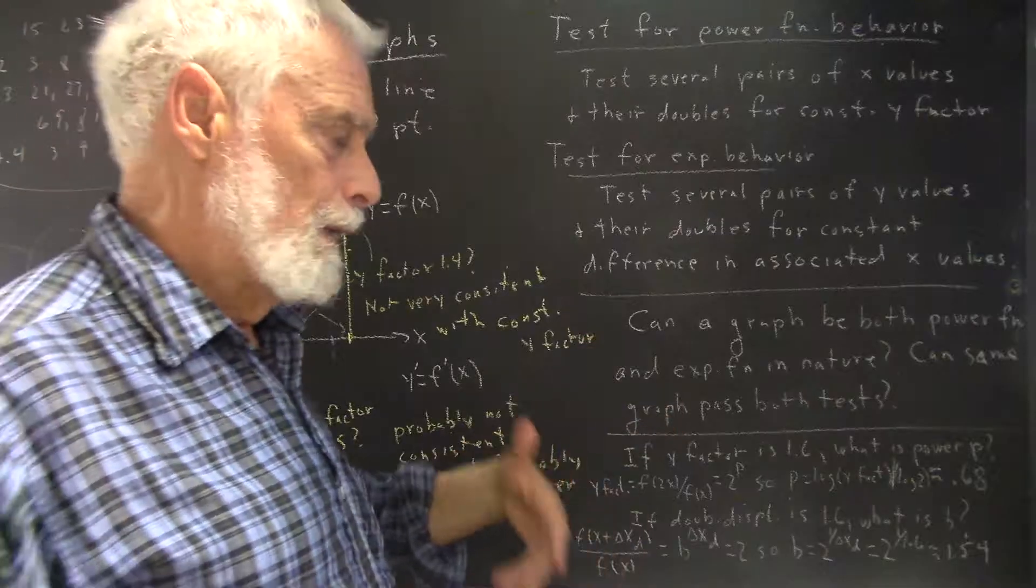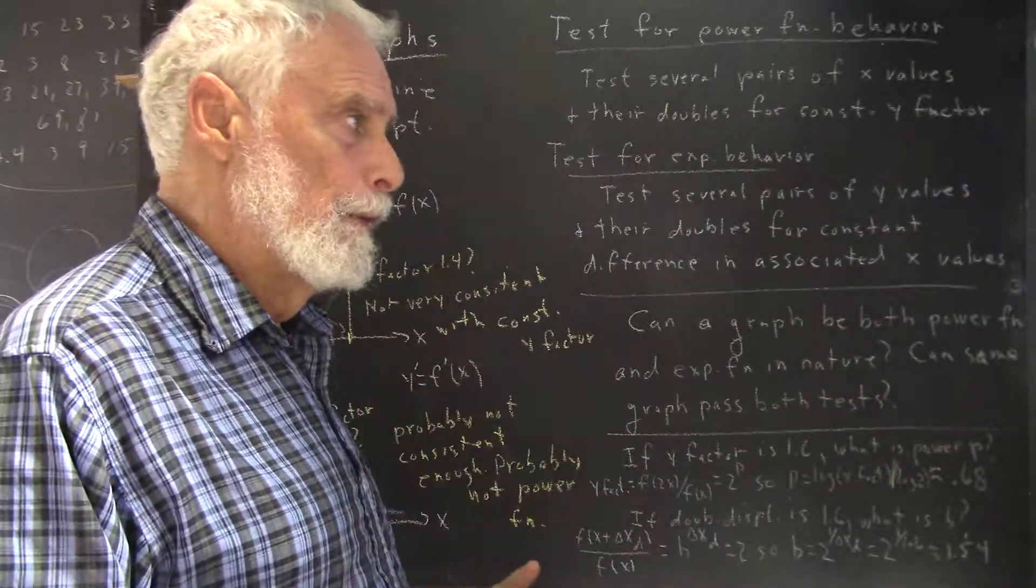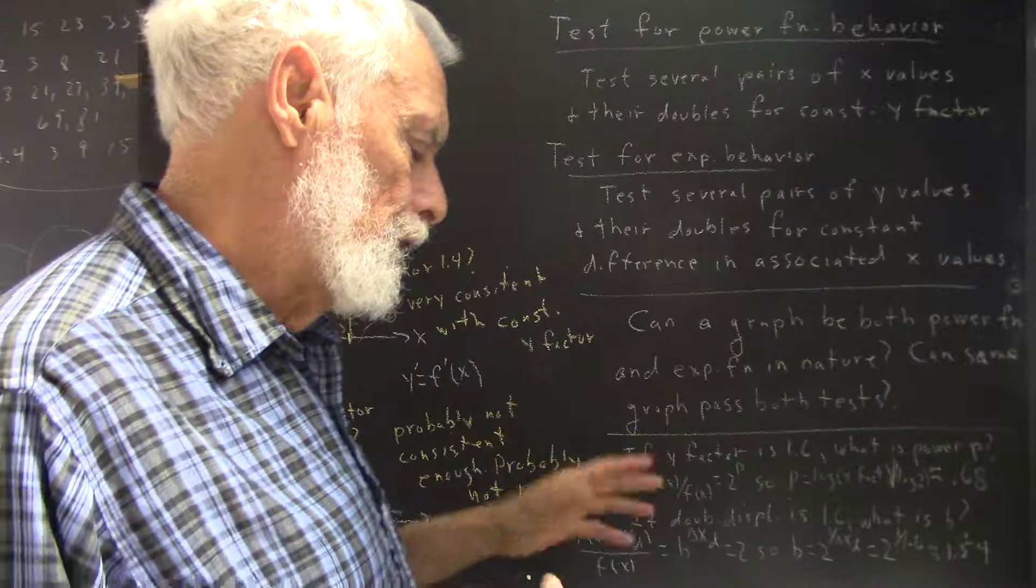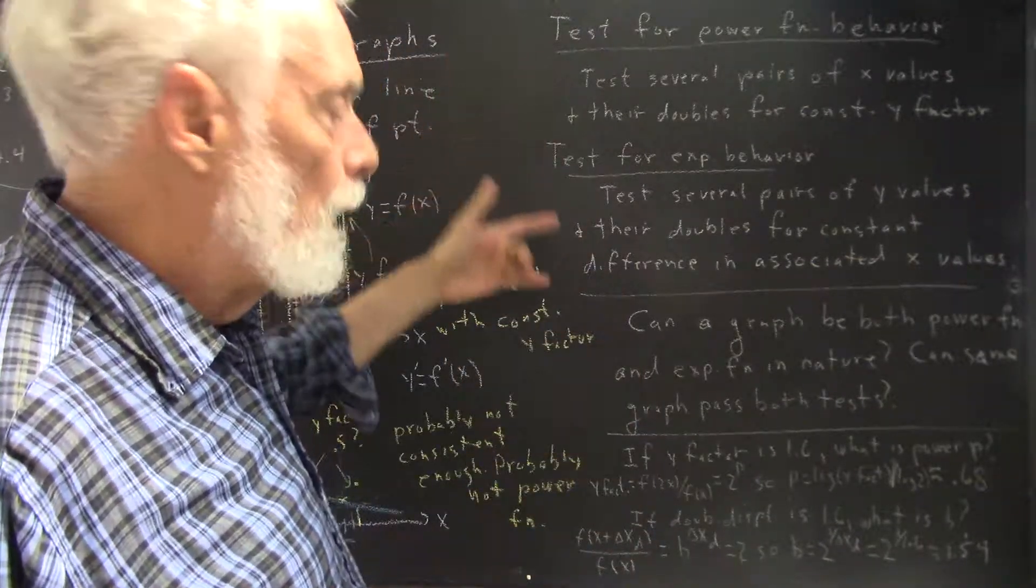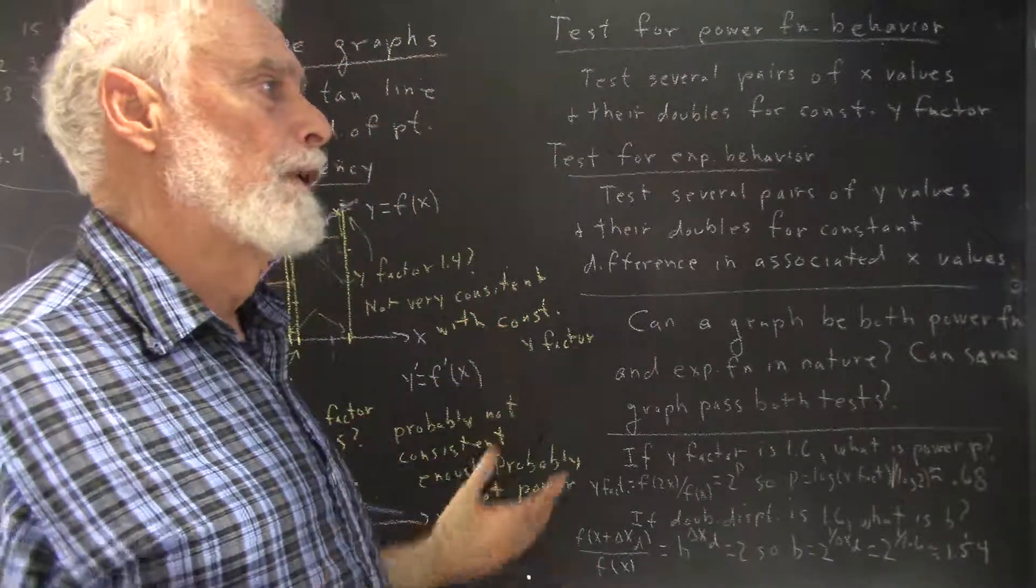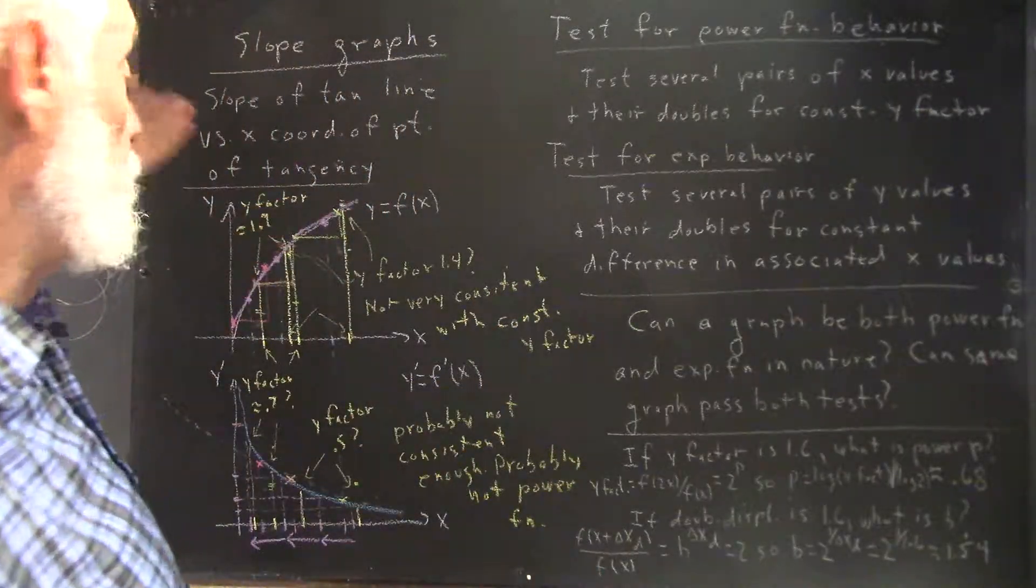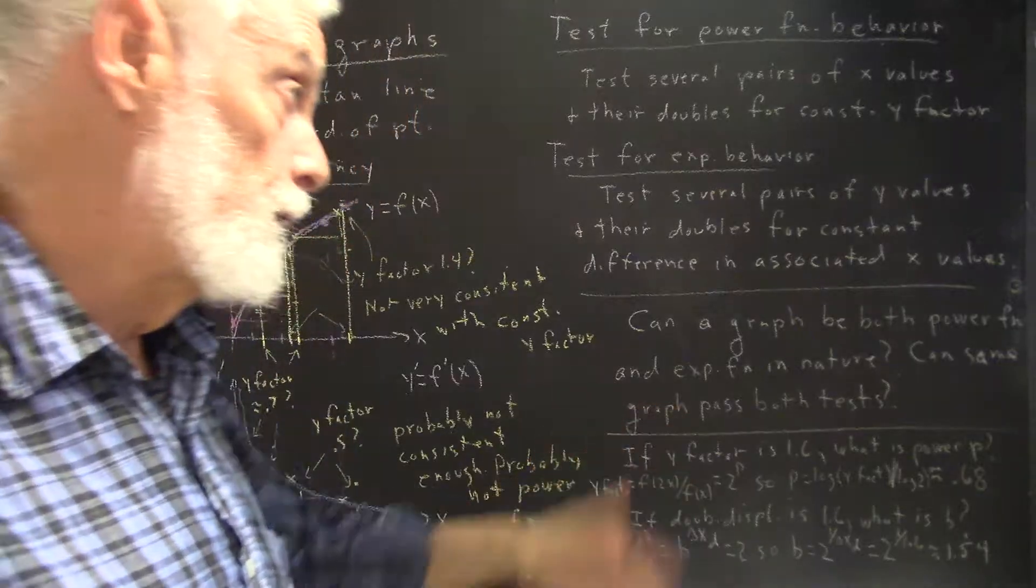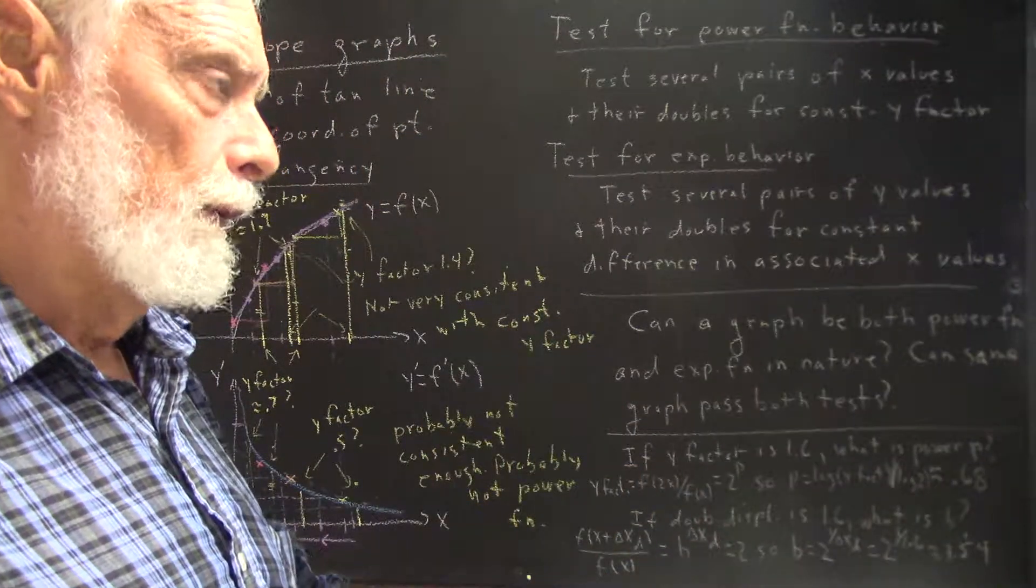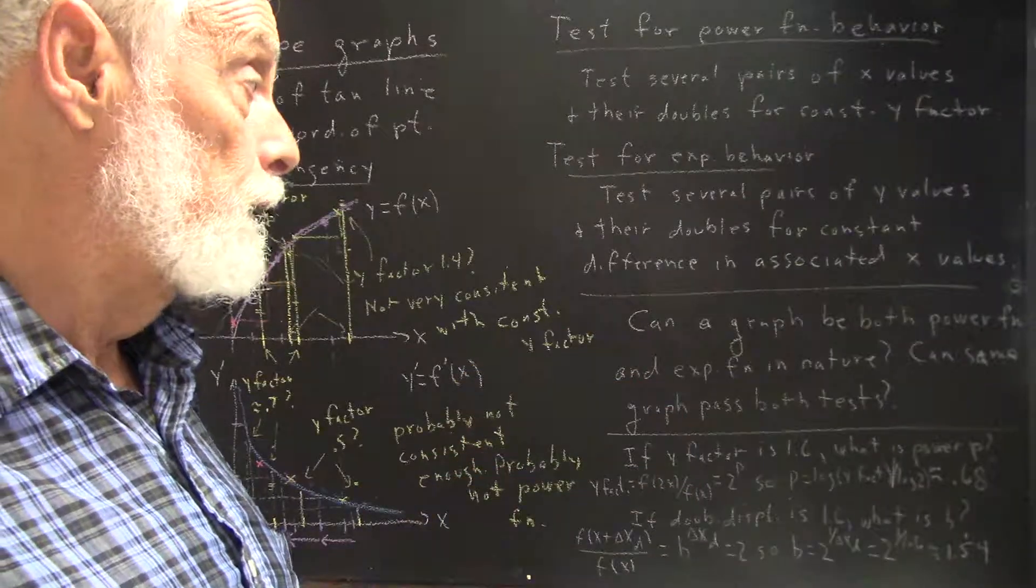And I'll add that people confuse power functions and exponential functions all the time. That's fairly natural, but you have to think in terms of this test to make the distinction. Or you have to memorize what the distinction is. Memorize the forms of the two functions, which is not that difficult. And then recognize when you have one or the other, which is apparently a little more difficult for people.